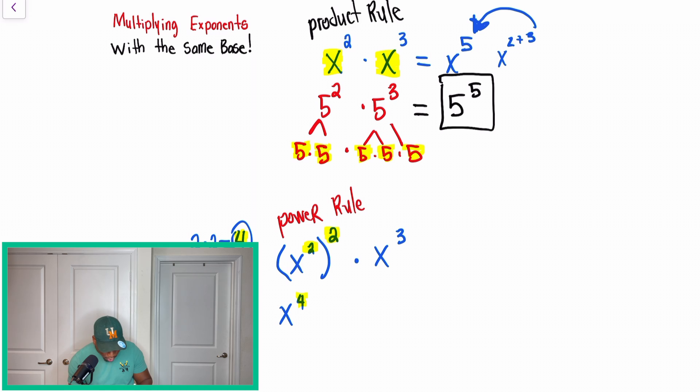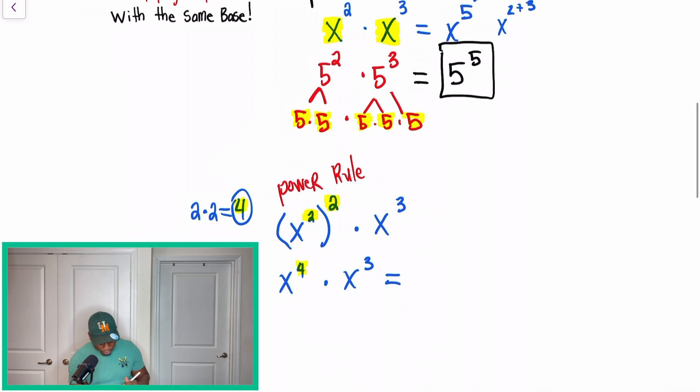Okay, guys? So that was the biggest difference. Now, once we continue this problem, because we're not done, we bring down x to the third power. And now this looks just like the power rule, or just multiplying with the same base. We're multiplying exponents with the same base. So right here, we would have x to the seventh as a final answer.